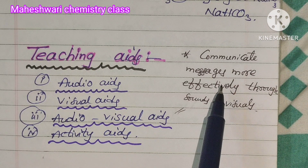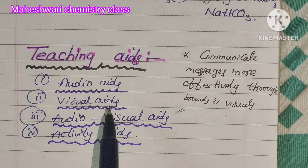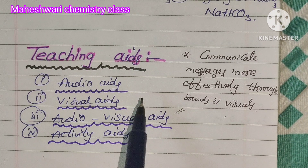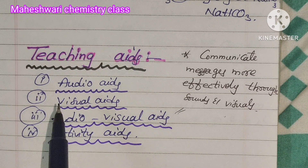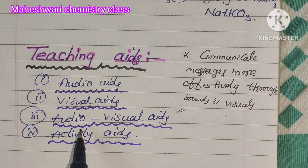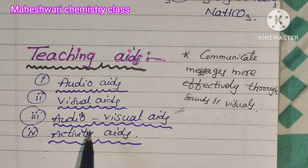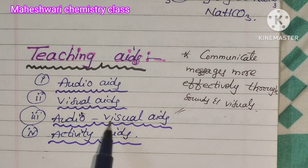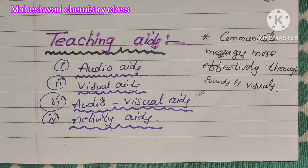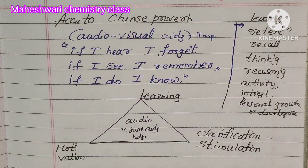Teaching guides communicate messages more effectively through sounds and visuals. The materials we use for teaching and learning purposes are TLM. Teaching guides are of 4 types: Audio, Visual, Audio-Visual, and Activity.